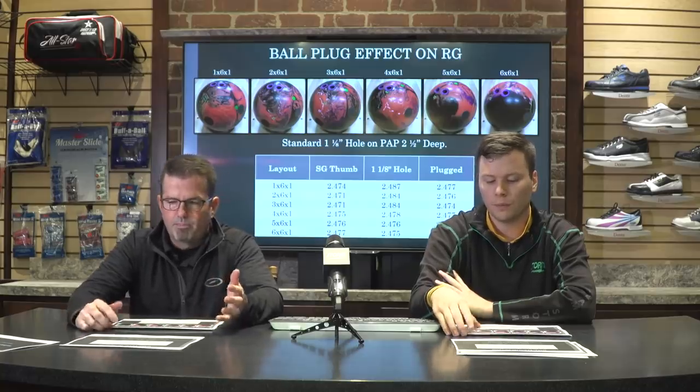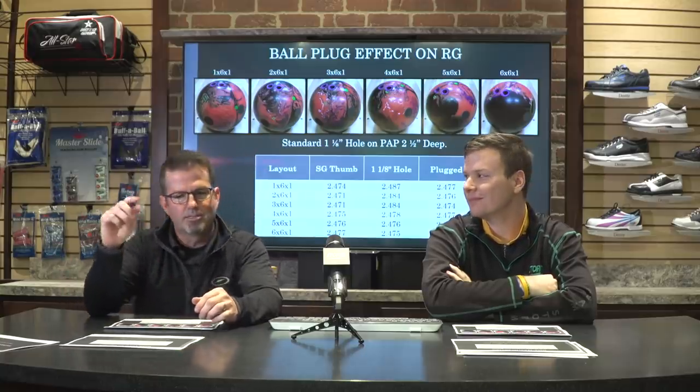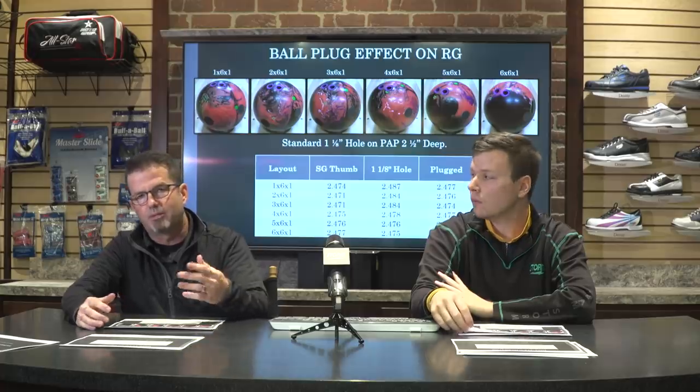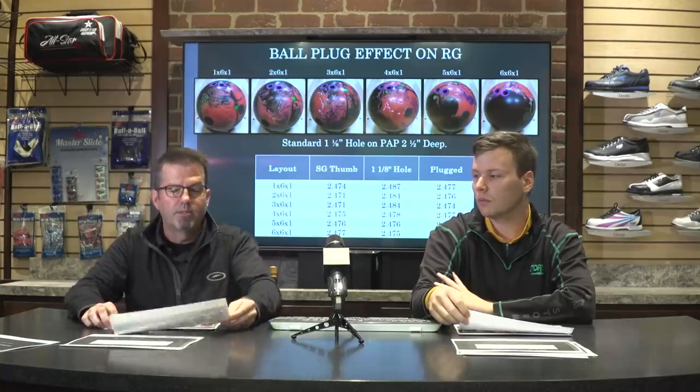Ball plug is around 1.0 to 1.1 grams per milliliter. If you look at the density of materials inside that bowling ball, the shell material is really close to what ball plug is, but the core material that wraps the weight block is a little bit lighter in density, and then you go back into a weight block that's a bit heavier — so they kind of balance out throughout the depth of that hole. The effects on RG — which determines where the ball wants to pick up front to back — show that we got about three-quarters of it back, but not a tremendous change overall.